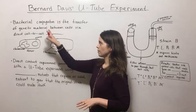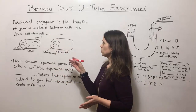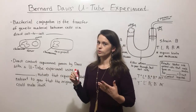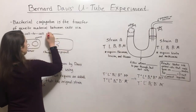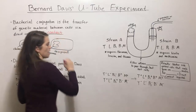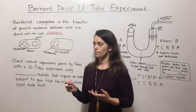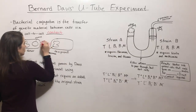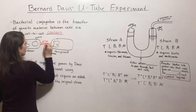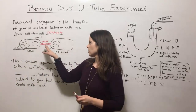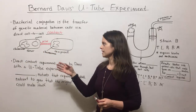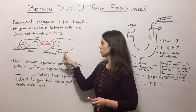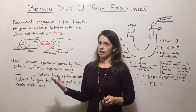First let's start by talking about bacterial conjugation. What is it? It is when genetic material is transferred from a donor cell to a recipient cell, specifically through direct cell-to-cell contact. This happens by way of a structure called a pilus, also known as a sex pilus or conjugation pilus.